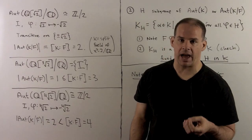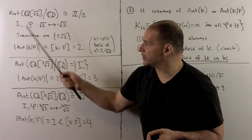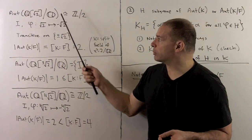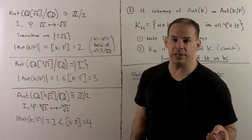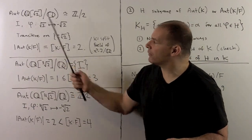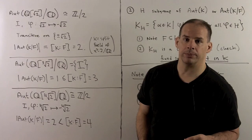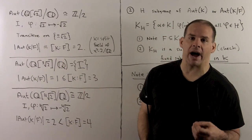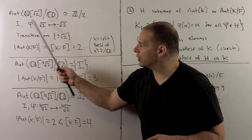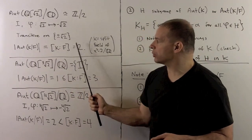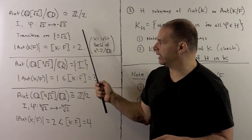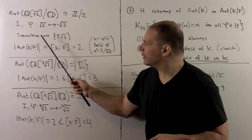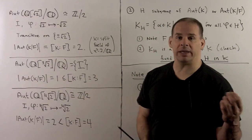Let's check our inequality with some examples. First, we have the automorphisms of Q adjoined √2, fixing the rationals. This is isomorphic to Z mod 2, with elements the identity automorphism and the automorphism carrying √2 to −√2. Here, K is just the splitting field of x² − 2 over the rationals, so we expect a transitive action of the group on the set of roots {±√2}, and we see that immediately. For the inequality, the order of the group equals the degree of K over F, both being equal to 2.